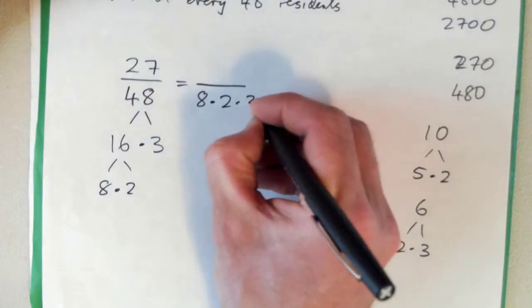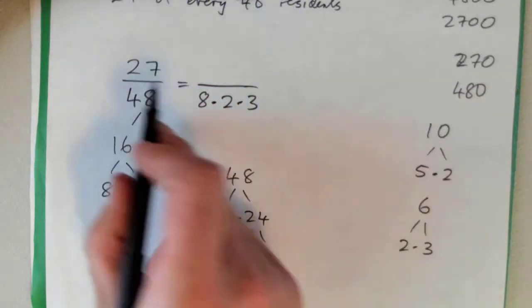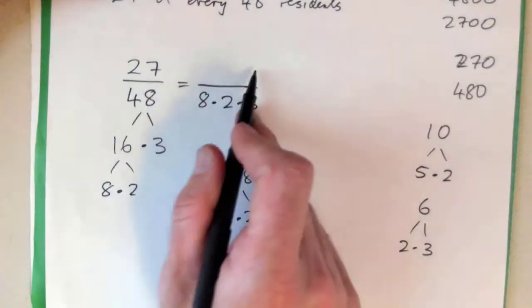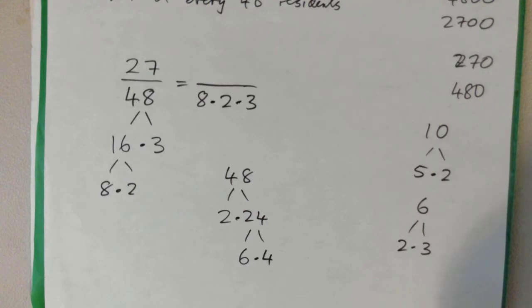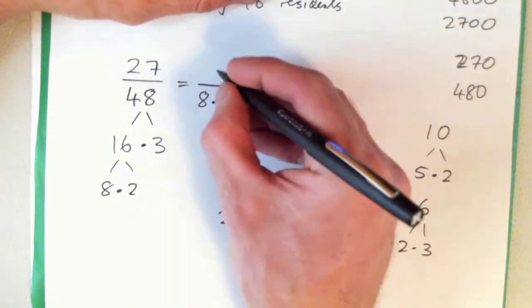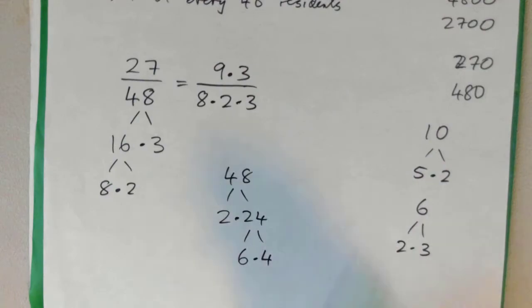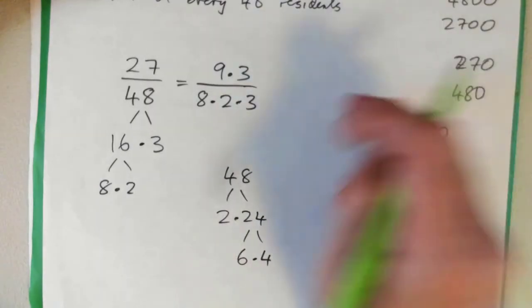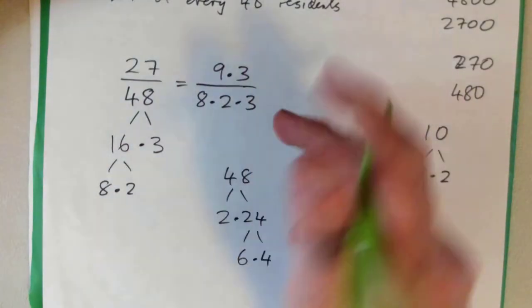But basically let's say okay, we've got 8 times 2 times 3 on the bottom, and let's split up 27. 27 is what times what? It's just a nice way of splitting up the number. And now if we've got common factors we can cross cancel.